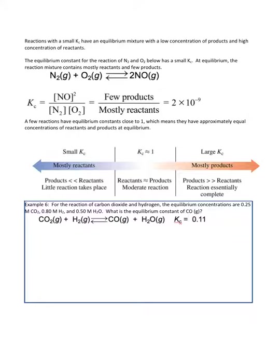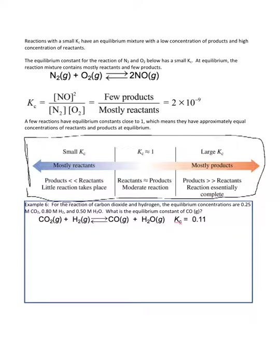There's a graphic that illustrates this. If Kc is approximately equal to 1, that means your reactants and products are roughly equal — about the same amount of each. Any Kc larger than 1 means you start having more products. Kc smaller than 1 means you have more reactants. That's what we mean by small Kc and large Kc. Anything above 1, you're talking more products; anything below 1, you're talking more reactants.